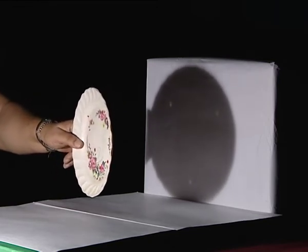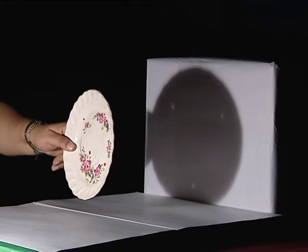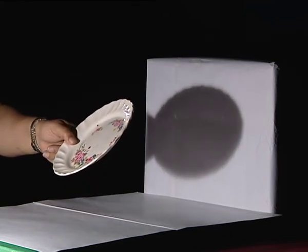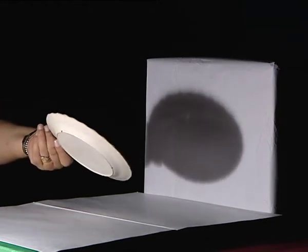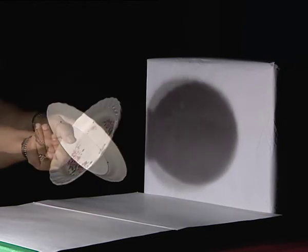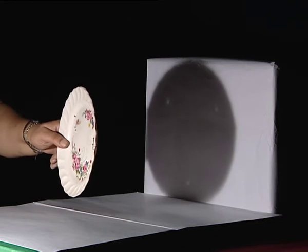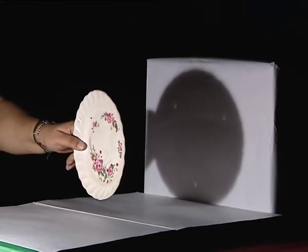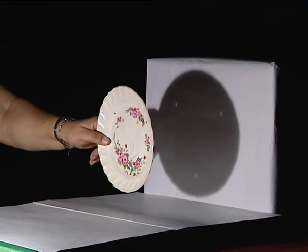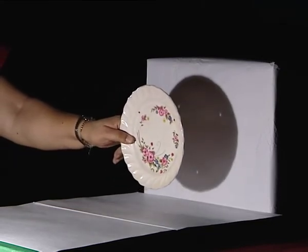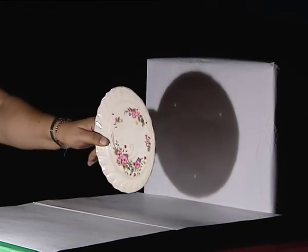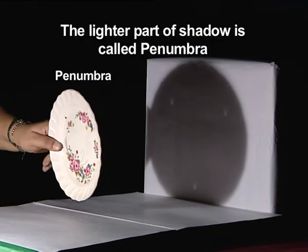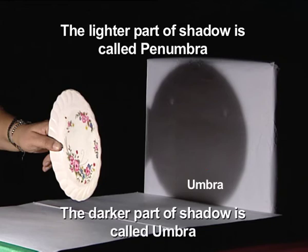The size may be different from that of the object. Their shape may be different and would depend upon where the object is placed between the source and the screen. Also notice that its sharpness is not the same in all locations. When you are closer to the screen, you get a very sharp shadow. When you are closer to the source, there is a slight haze around the shadow. The lighter part is called penumbra and the darker part is called umbra.